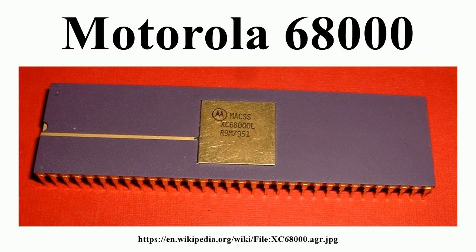The 68000 also saw great success as an embedded controller. As early as 1981, laser printers such as the Imagen Imprint 10 were controlled by external boards equipped with the 68000. The first HP LaserJet, introduced in 1984, came with a built-in 8 MHz 68000. Other printer manufacturers adopted the 68000, including Apple with its introduction of the LaserWriter in 1985, the first PostScript laser printer. The 68000 continued to be widely used in printers throughout the rest of the 1980s, persisting well into the 1990s in low-end printers.